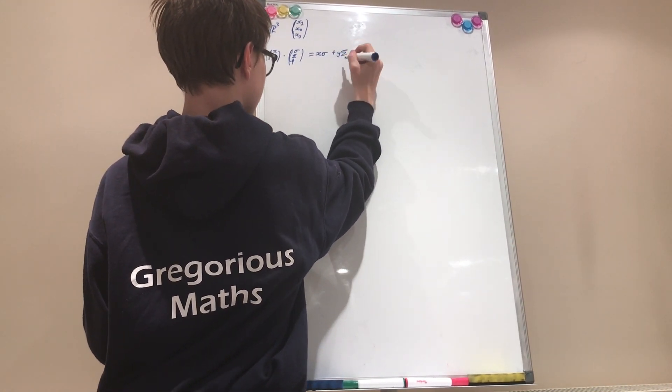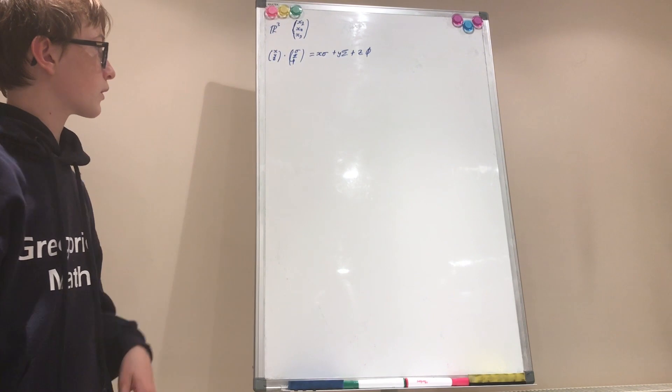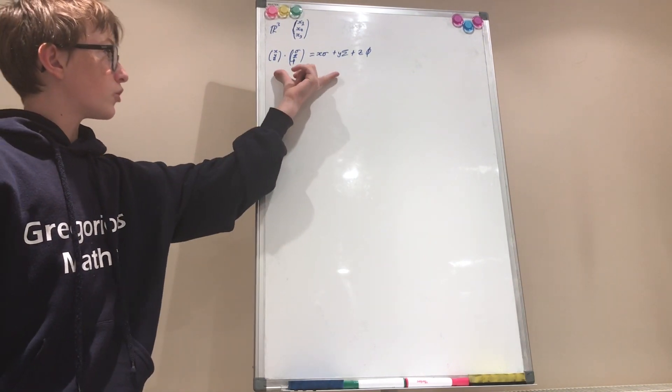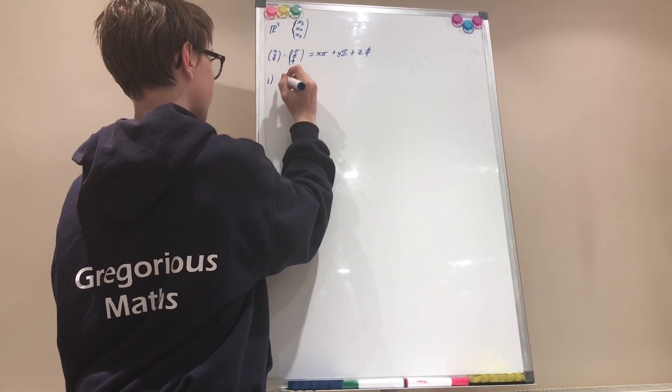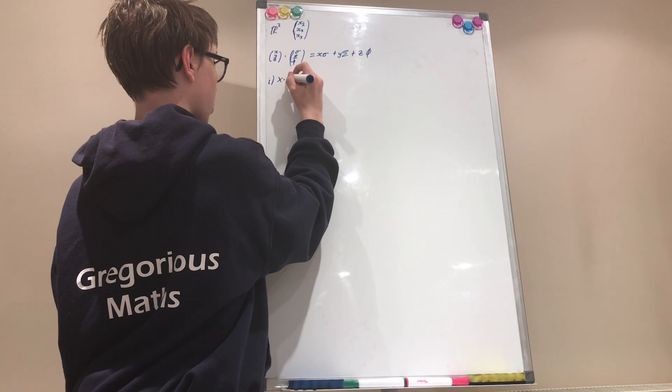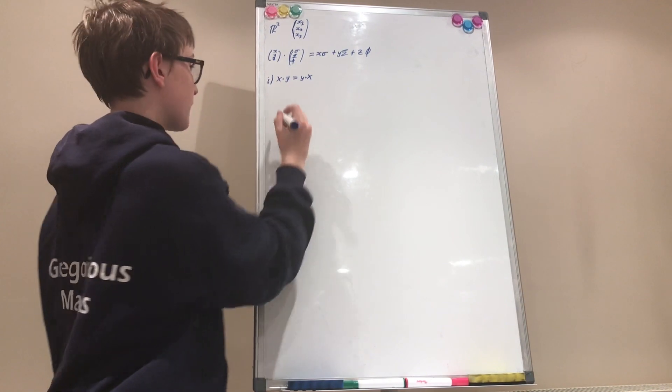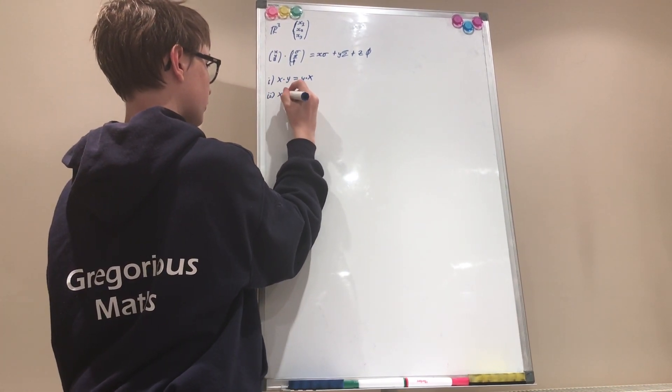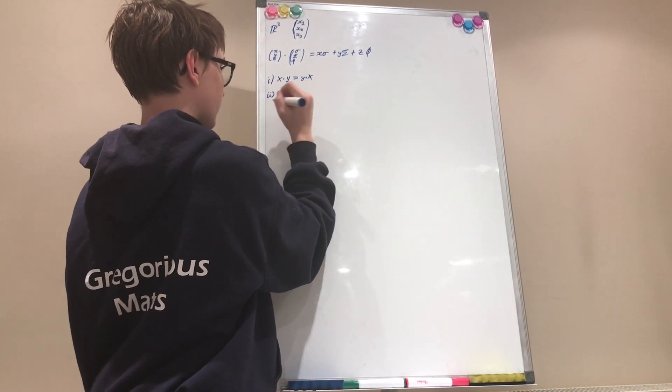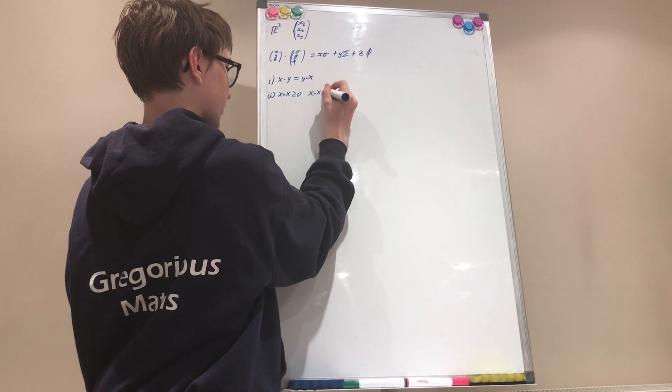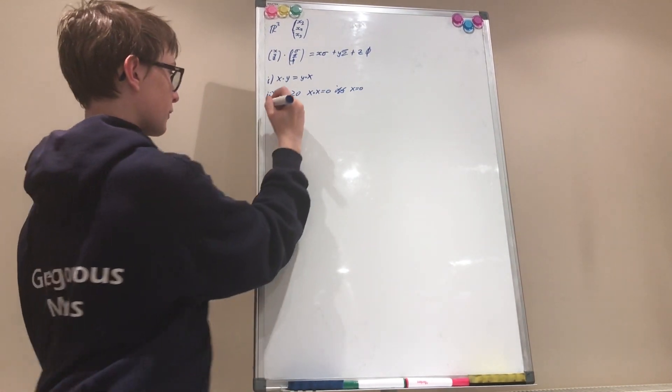Now this dot product is actually called an inner product because it satisfies three axioms. Number one is that x dotted with y is equal to y dotted with x. Number two is that x dotted with x is always going to be greater than or equal to zero, where x dotted with x is equal to zero if and only if x equals zero.